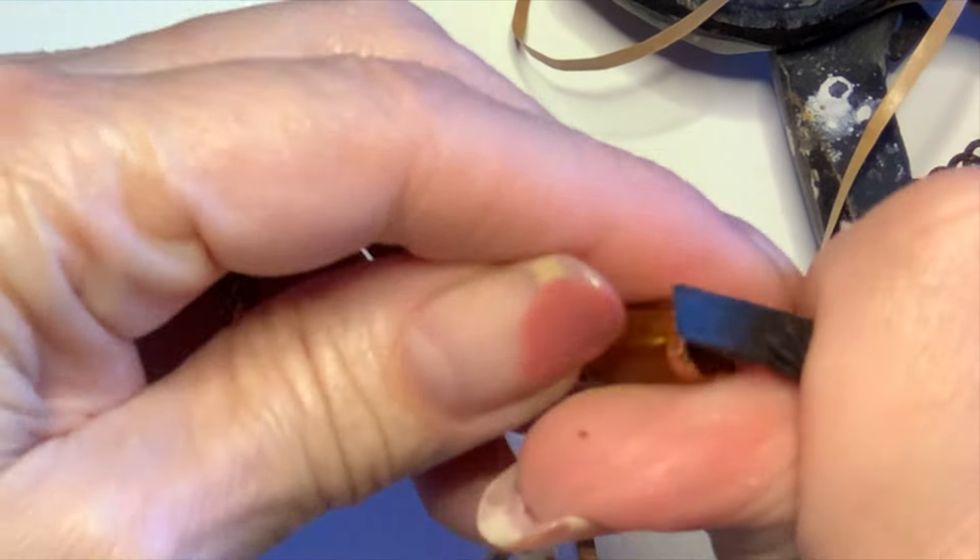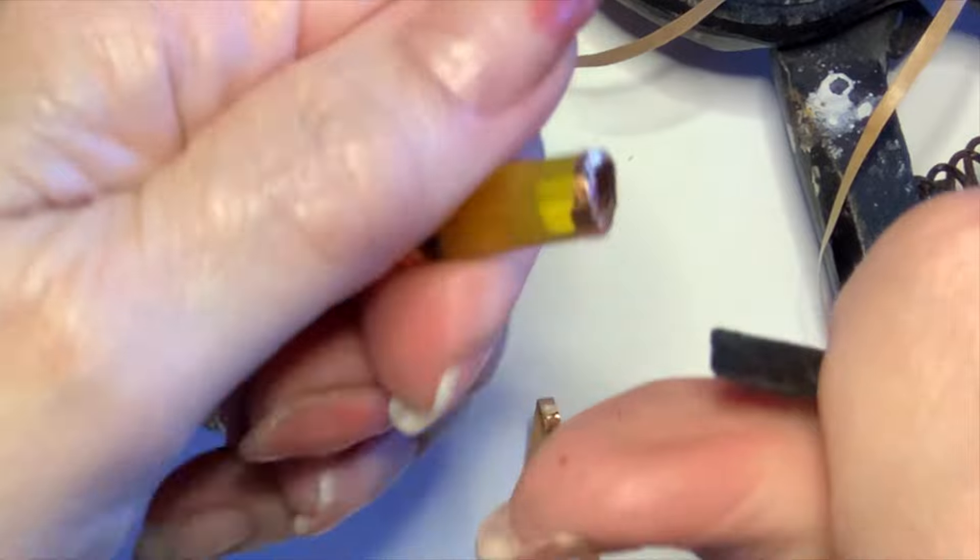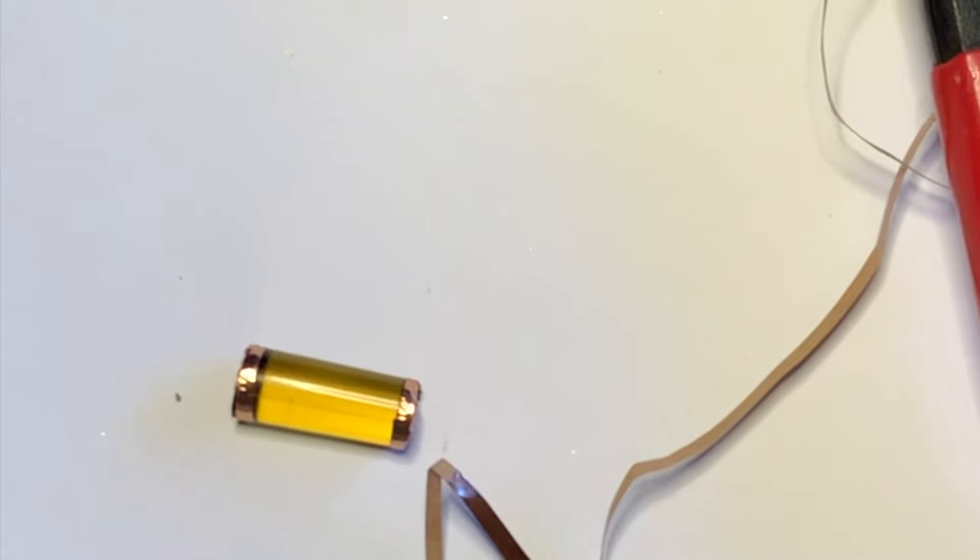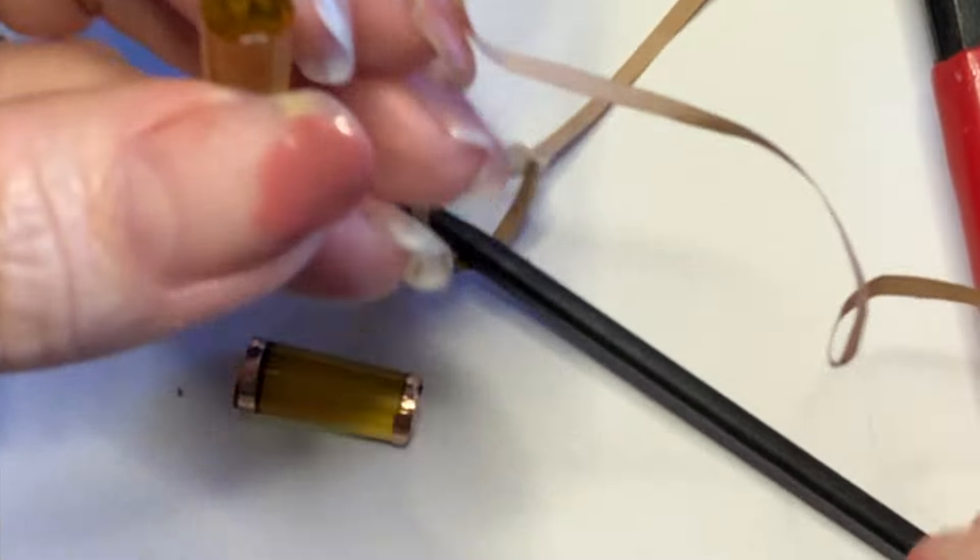Now I'm using seven thirty-seconds inch wide black backed copper foil, and I'm cutting the foil in half because I really don't need that big a band wrapped around.